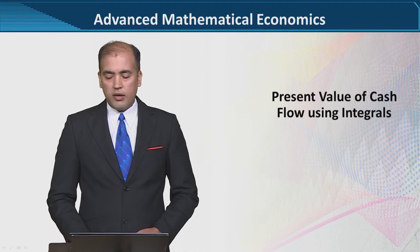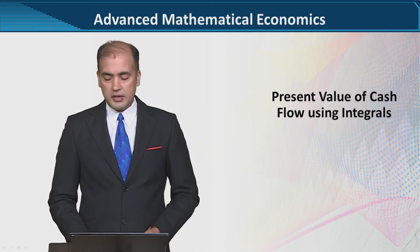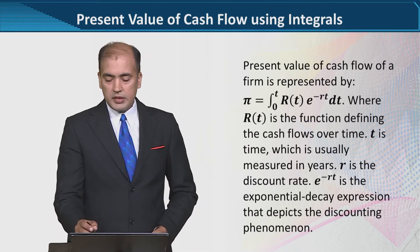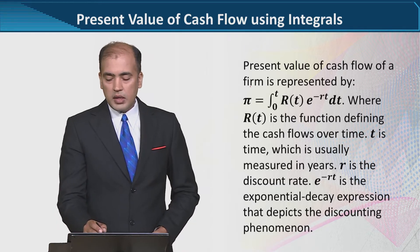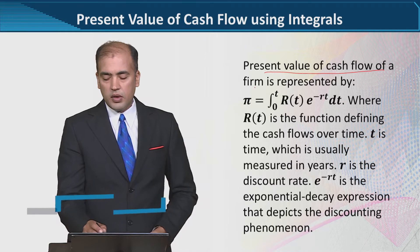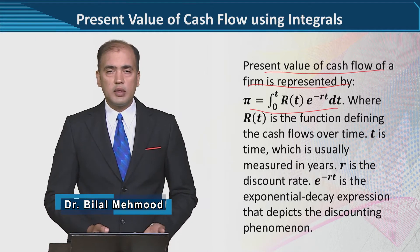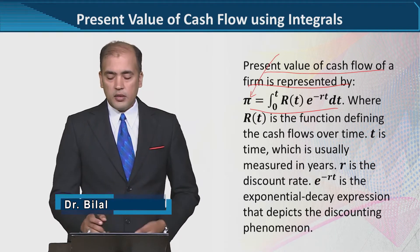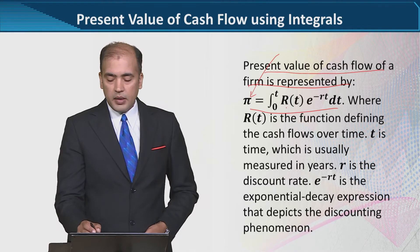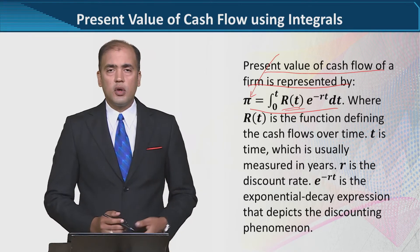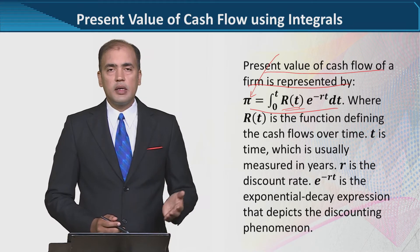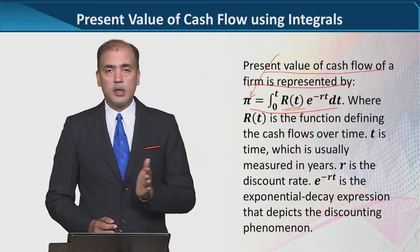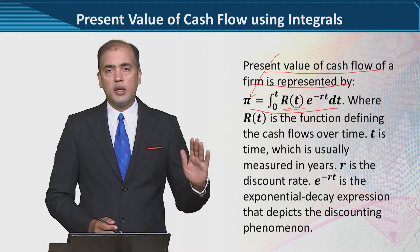Here we have the present value of cash flows, and the tool that we are going to use is integration. We have a symbolic representation in the beginning. The present value of cash flow of a firm is represented by this formula, where the overall profit — the present value — can be derived using this stream of revenues. RT shows how revenues flow over time, and we are considering it in a very good sequence.